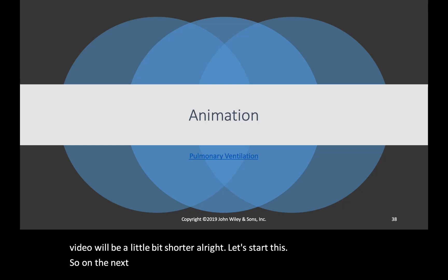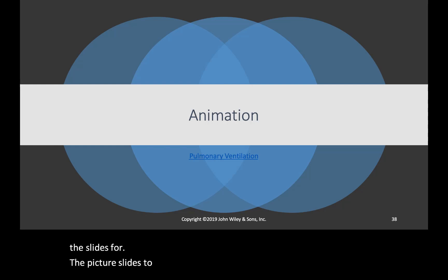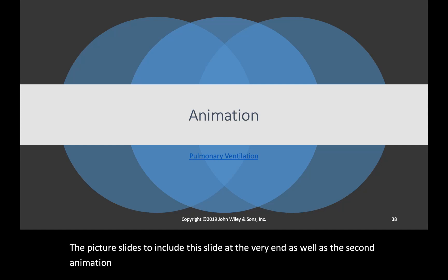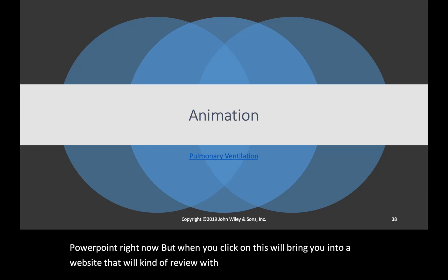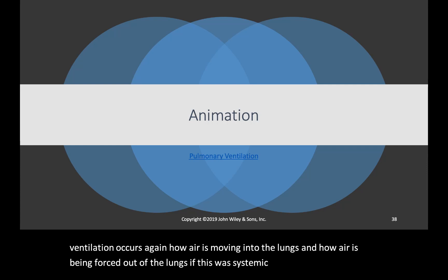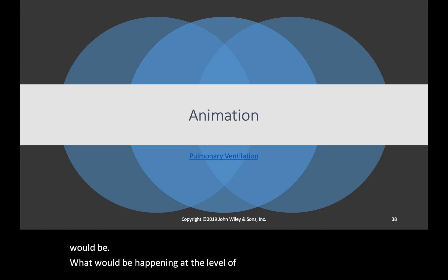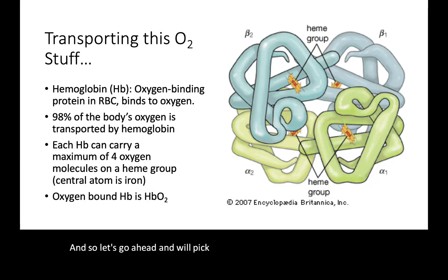On the next slide is actually a video animation. I have reposted the slides to include this slide at the very end as well as the second animation slide. When you click on it, it will bring you into a website that reviews exactly how pulmonary ventilation occurs — how air is moving into the lungs and how air is being forced out. If this were systemic or tissue ventilation, this would be what's happening at the level of the tissues. But this video is on pulmonary ventilation. Let's pick back up with how oxygen is transported throughout our circulatory system.